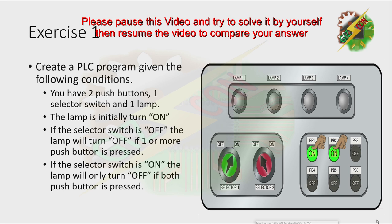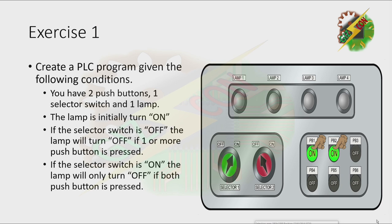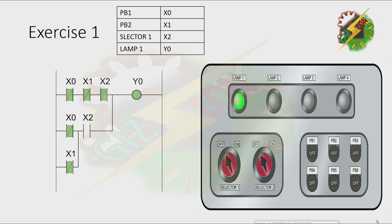Now I want you to pause this video and try to solve this problem, then resume the video to reveal the answer. Here is my answer: with the selector switch off, pressing PB1 turns the lamp off, and pressing PB2 turns the lamp off also.